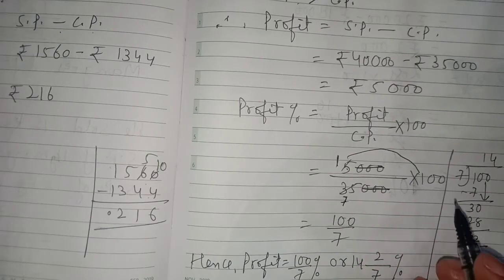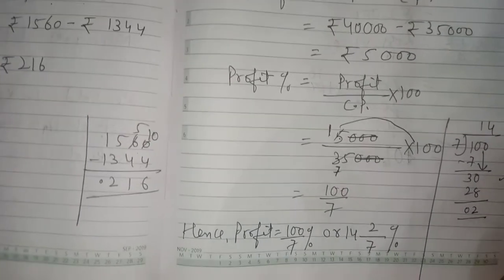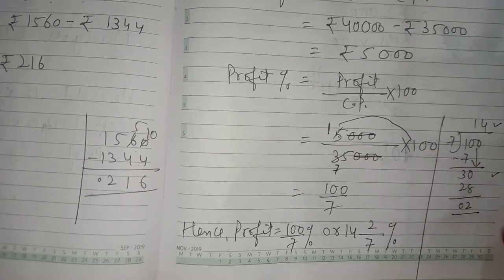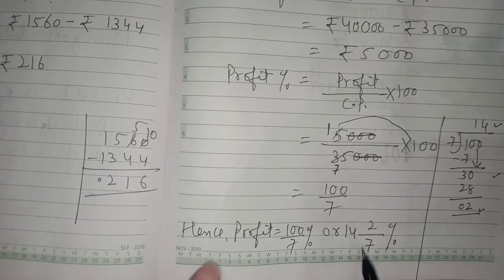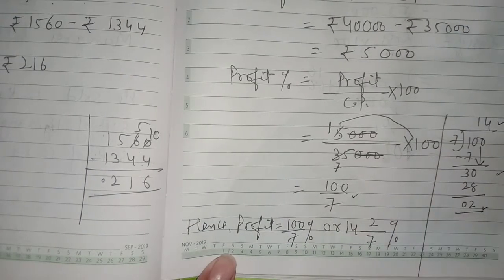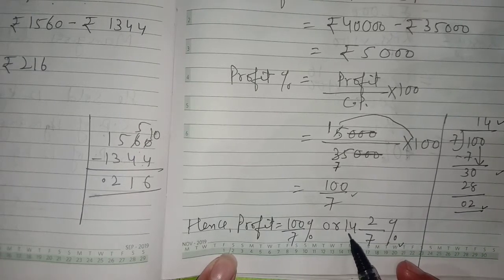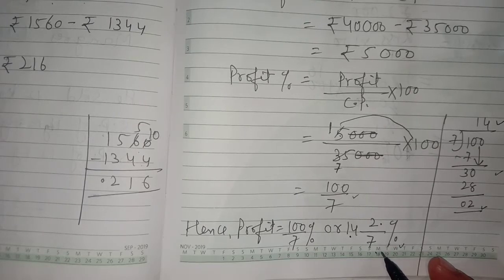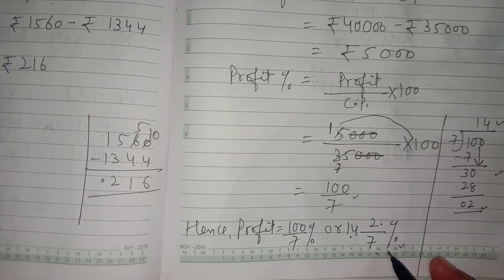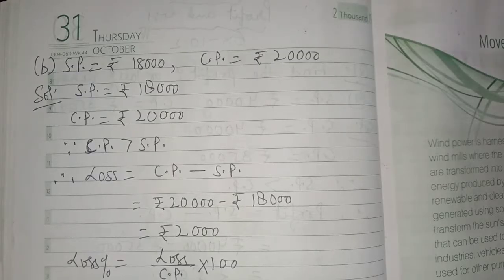Multiply the numerator by 100 to get 100 over 7. Dividing 100 by 7 gives a quotient of 14 and a remainder of 2. So the profit percent can be written as 100/7% or as the mixed number 14 and 2/7 percent. This is the profit percent for Part A.